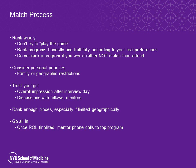Rank enough places, especially if you are geographically limited. The right number is different for each person based on your competitiveness and any limitations — there's no magic number, but run it by your mentor to make sure you're applying to enough places. Finally, once you've finalized your rank order list, go all in by asking your mentors to make phone calls to the top program on your list, as those gestures go a long way, especially if they have a relationship with the program faculty or program director.